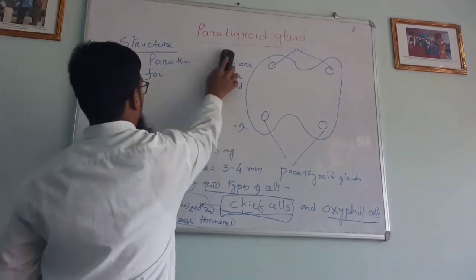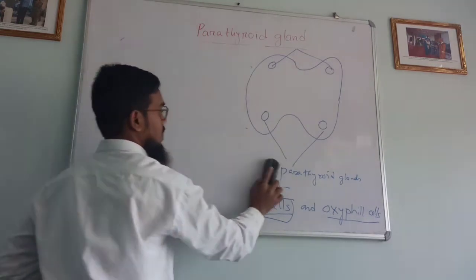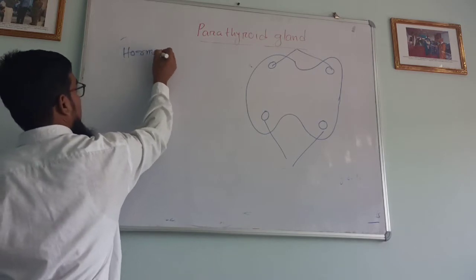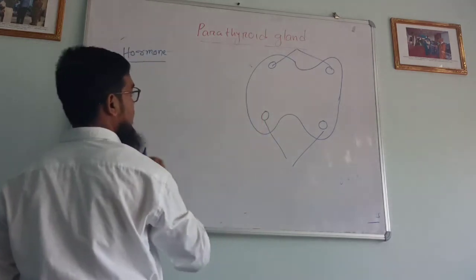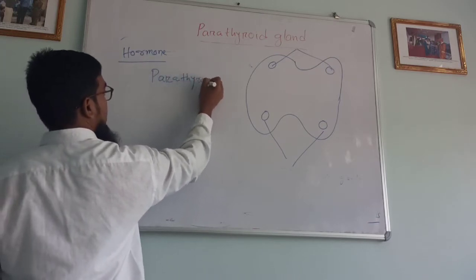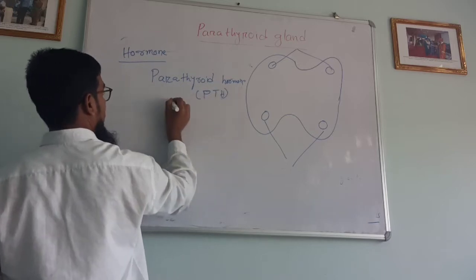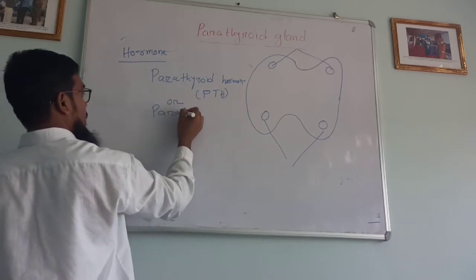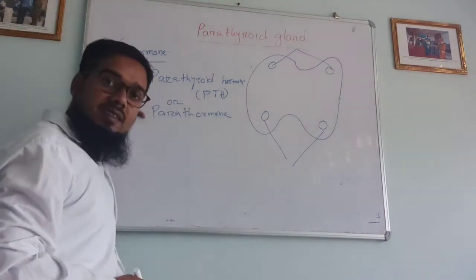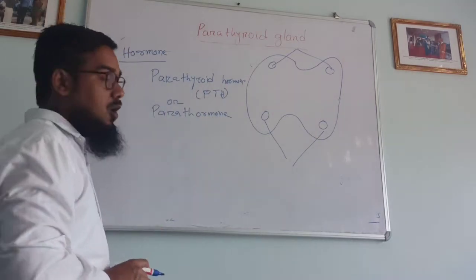Now we will discuss about hormones and their functions. Parathyroid gland synthesizes parathyroid hormone, PTH, also called parathormone. It synthesizes only a single hormone which is called parathyroid hormone or parathormone.